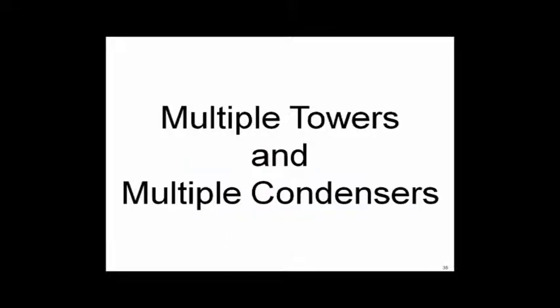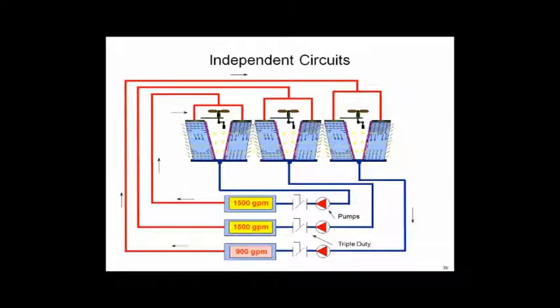Let's go back to our multiple tower and condenser example and ask: how do you pipe? First, let's look at independent circuits. Each tower has its own chiller and its own pump — essentially three separate chiller plants combined into one piping diagram. You don't see this much because of first cost: you're running three sets of supply and return pipes out to the towers. There's also no standby — you have no way to switch one chiller to another tower. However, it's the easiest to operate and has no flow-staging issues.